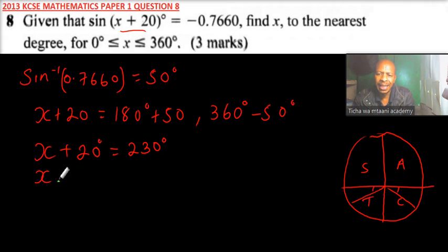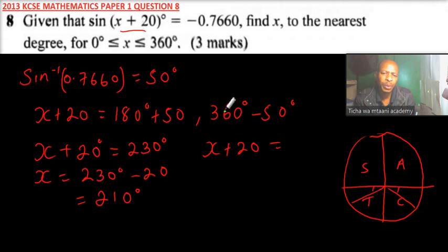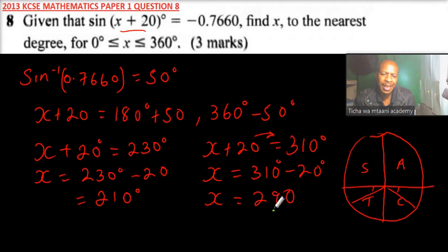So you'll find x is equals to, you take 20 to the other side, so it is 230 minus 20, and that will give you 210 degrees. The other one will say that x plus 20 is equals to, when you subtract 360 minus 50, you'll be able to get 310. So you take 20 to the other side becomes negative, so x is equals to 310 minus 20. And these are degrees, that means our x is equals to 290 degrees.